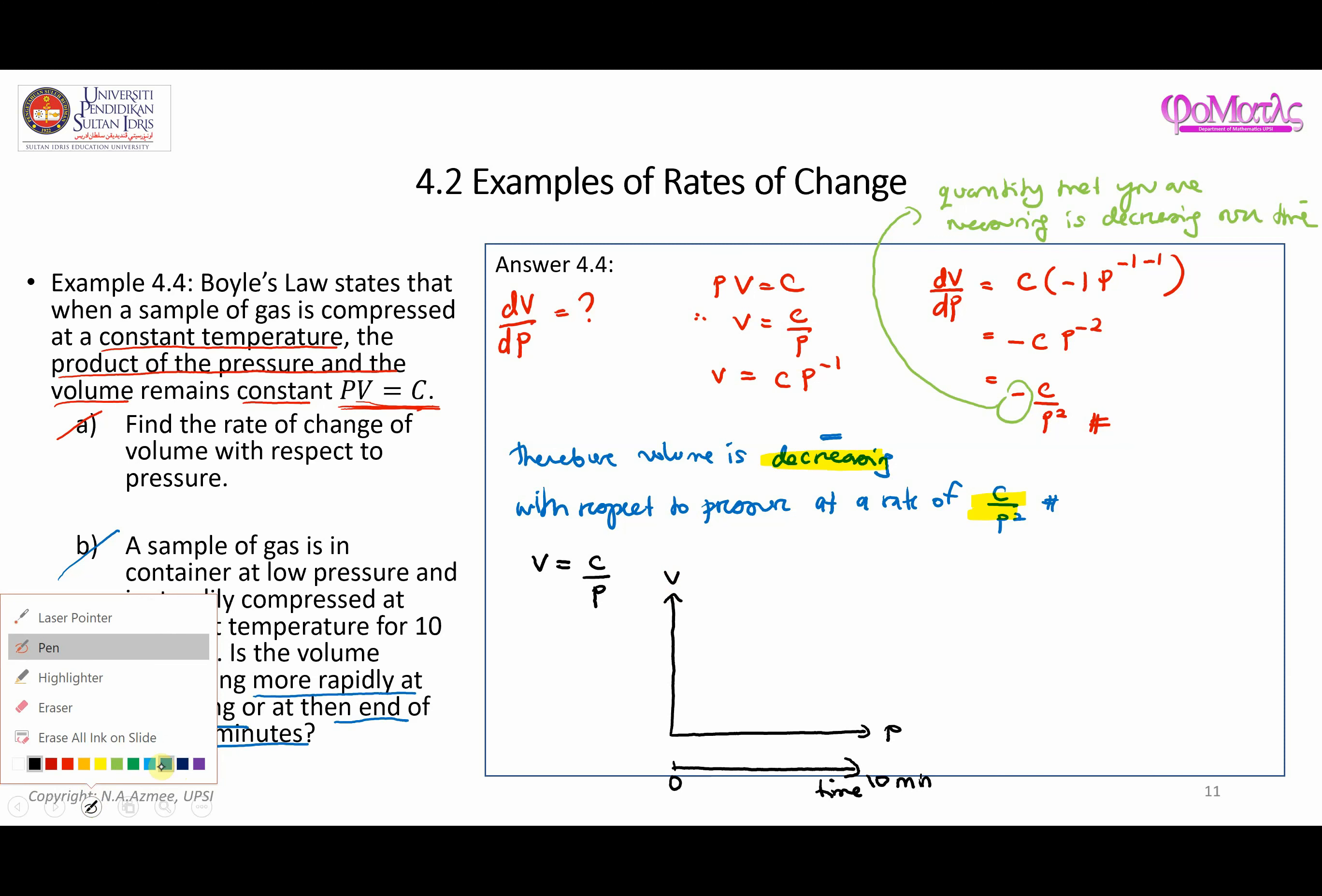So now if I consider this axis to be represented as volume, and this graph that I have over here, V = C/P, can be sketched as such. And this is something that you have learned in chapter one. So C is a constant, so C times 1/P—this is how the graph may look like.